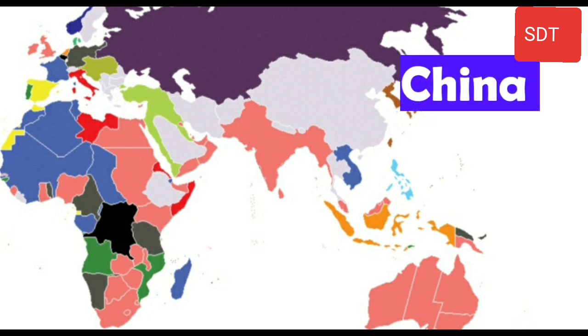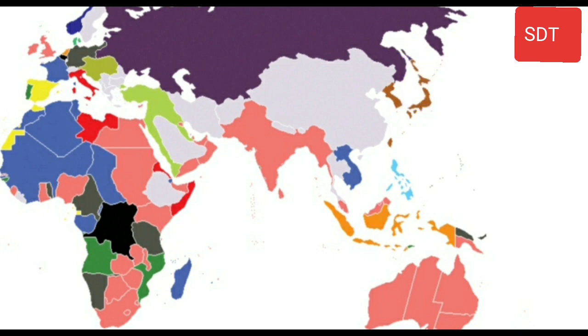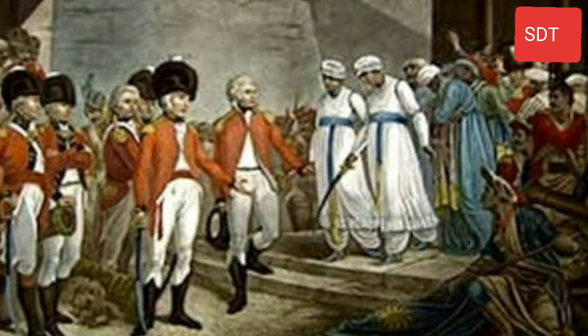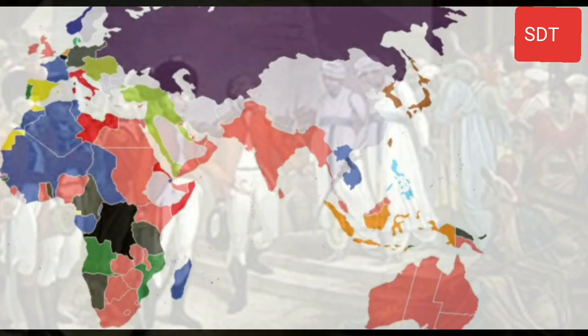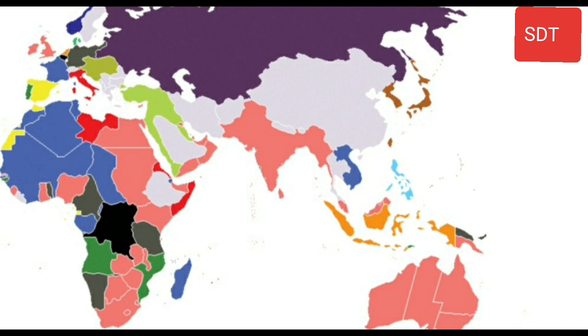Identify two ASEAN and one African country that was not a colony of any power. Also identify whose colony Australia was. Even independent countries like China were actually under the control of many colonial powers and independent only in name.